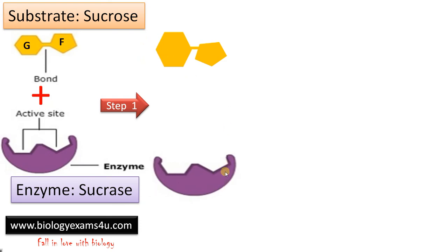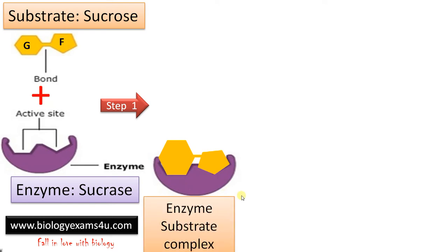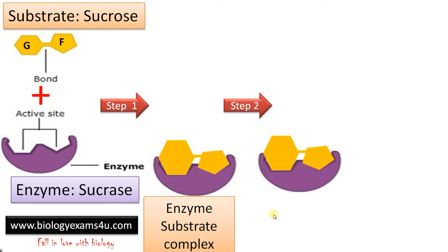Now we have the enzyme and the substrate. Step one is the binding of the substrate to the active site of the enzyme. The substrate binds to the active site of enzyme sucrase, resulting in the formation of the enzyme-substrate complex.